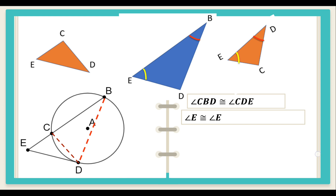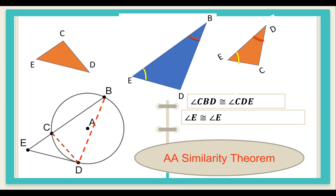We can clearly see in the two triangles that there are two pairs of congruent angles. If that is the case, then we can conclude by the Angle-Angle similarity postulate that triangle DBE is similar to triangle CDE.